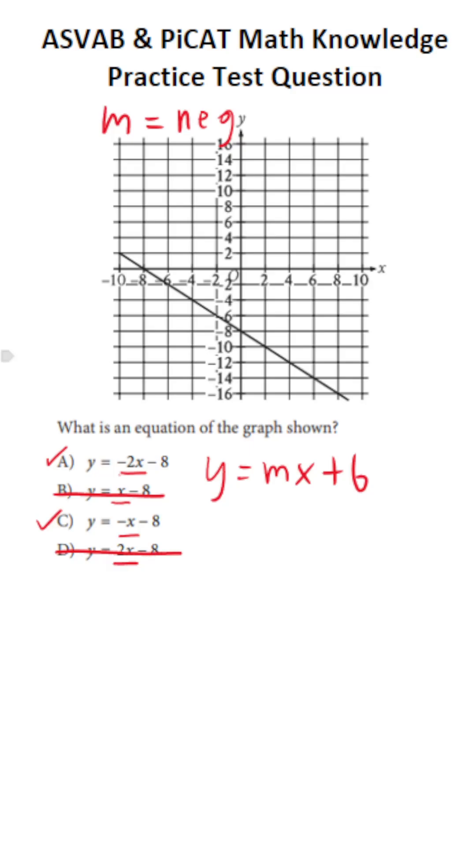Now let's talk about the y-intercept, that is b. b is the point at which this line intersects the y-axis here. And it may be hard to see, but it does that right at negative 8. So we know b in this case is negative 8.